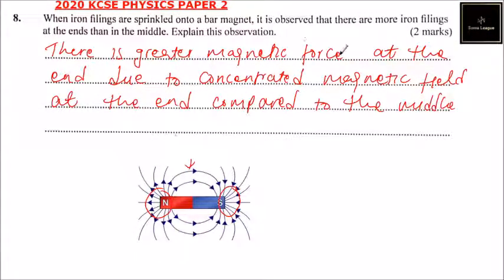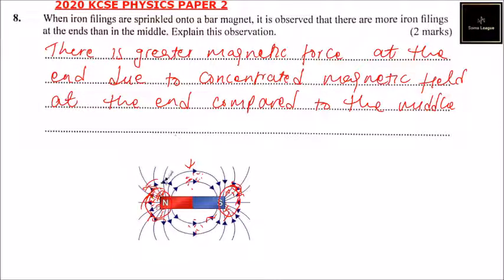So that explains why there are more iron filings — this is where you find more magnetic field concentrated, compared to just a few in the middle. So that is how you answer that question and you should be able to get two marks.